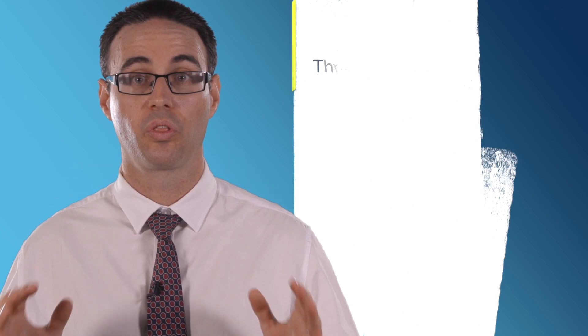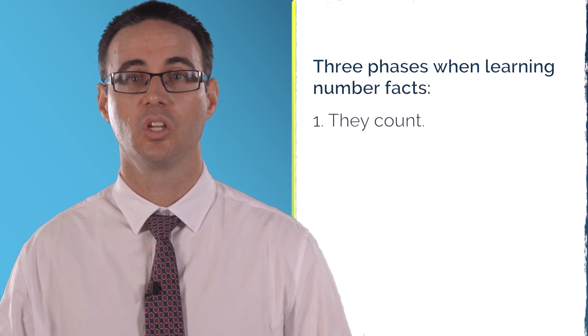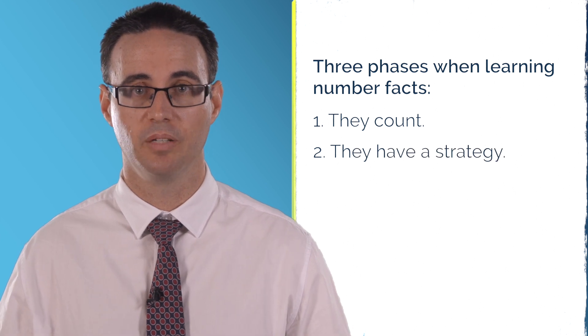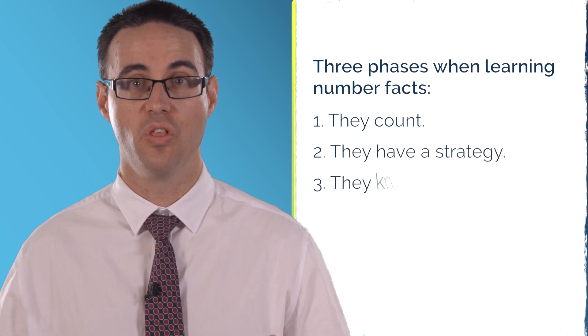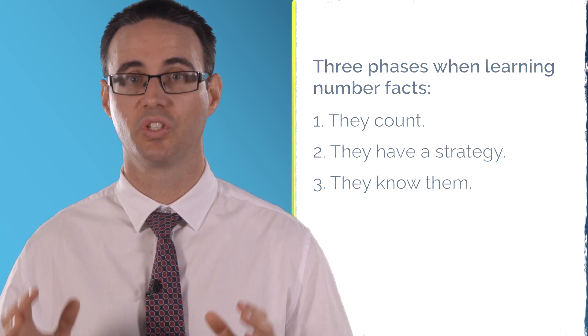Students typically go through three phases when learning their number facts: one, they count; two, they have a strategy; three, they know them. We aim to move ones to twos and twos to threes.